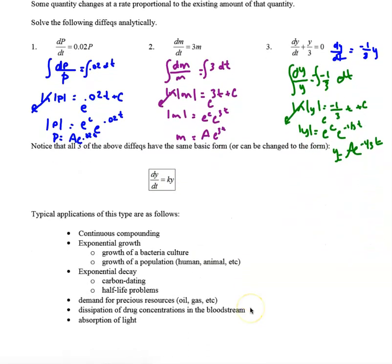So what types of scenarios do we typically see in this format? Well, exponential growth, which is the most obvious because they all look like exponential growth equations, but that's, for example, the growth of a bacteria culture, the growth of human population, animal population, continuous compounding, this is generally to do with referring to money, exponential decay, carbon dating, half-life problems, demand for precious resources, dissipation of drug concentrations in the bloodstream, and the absorption of light.